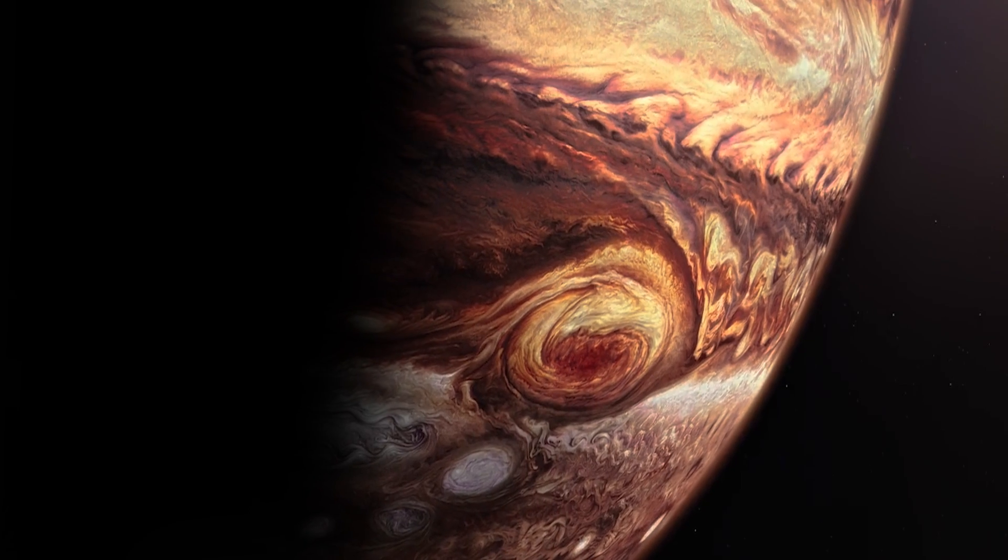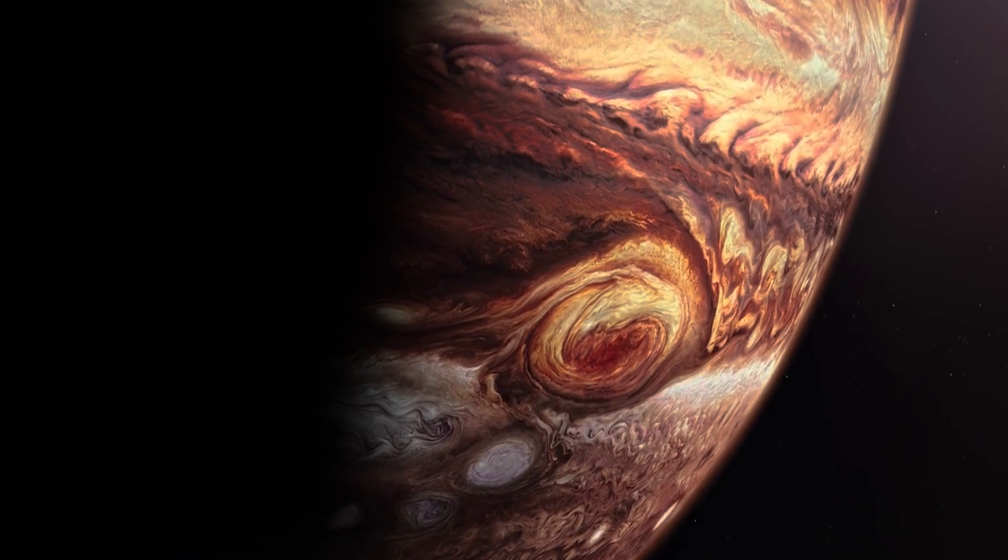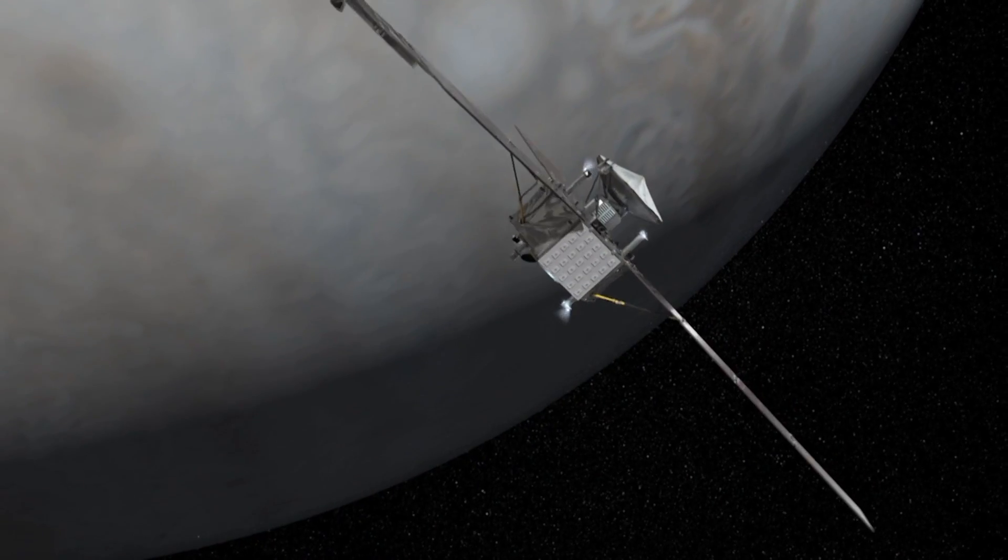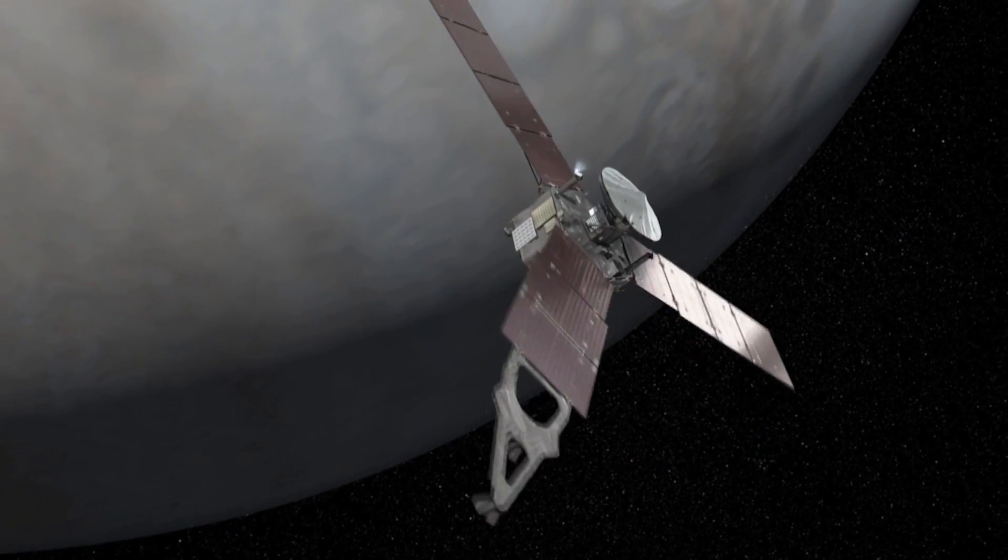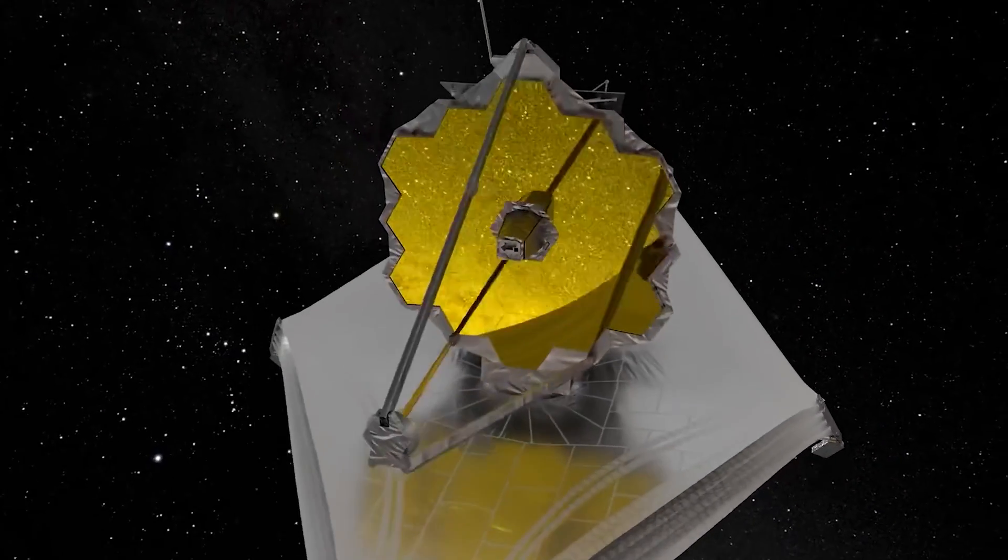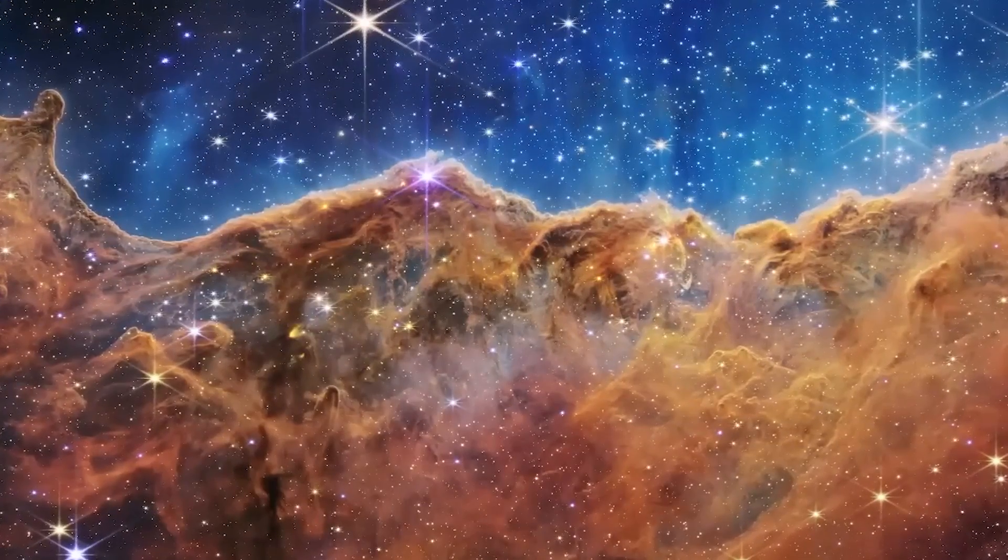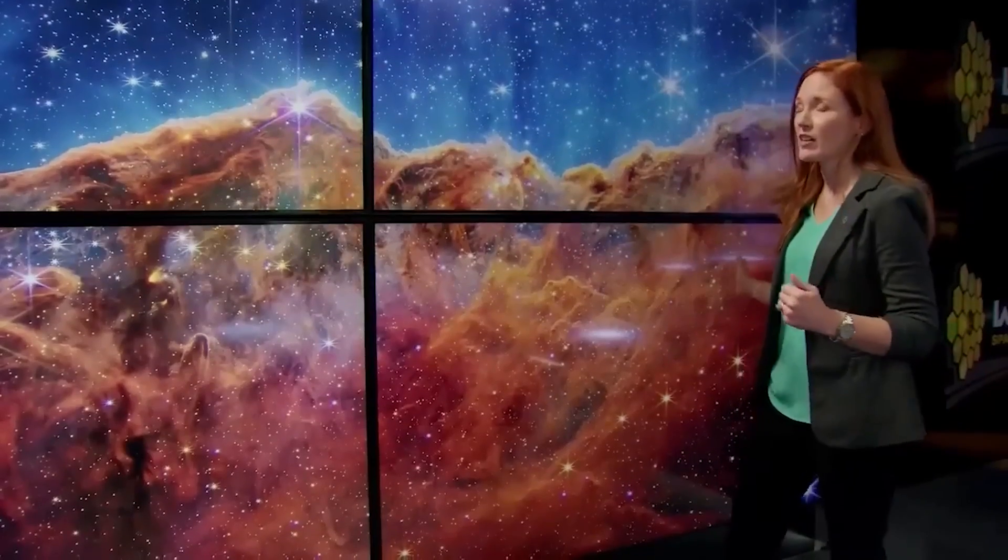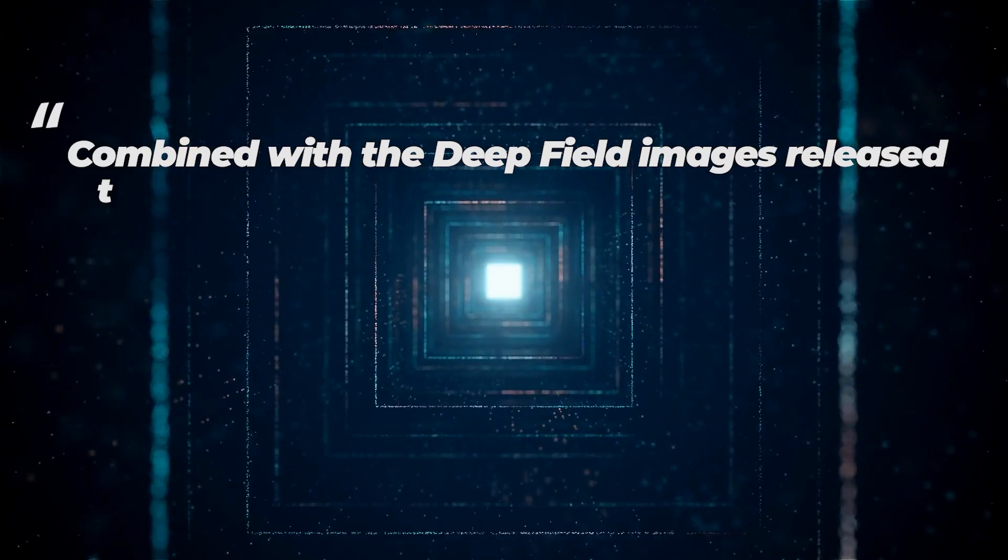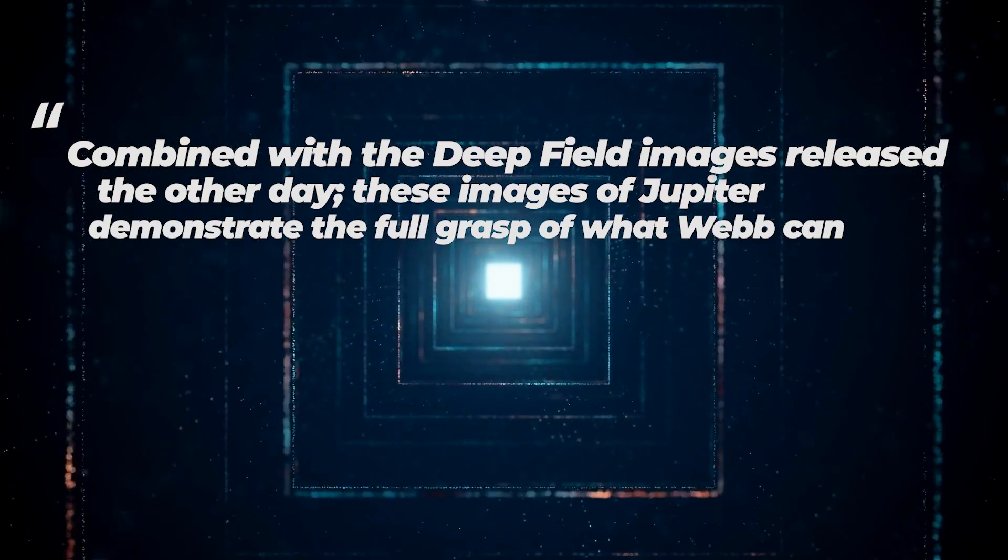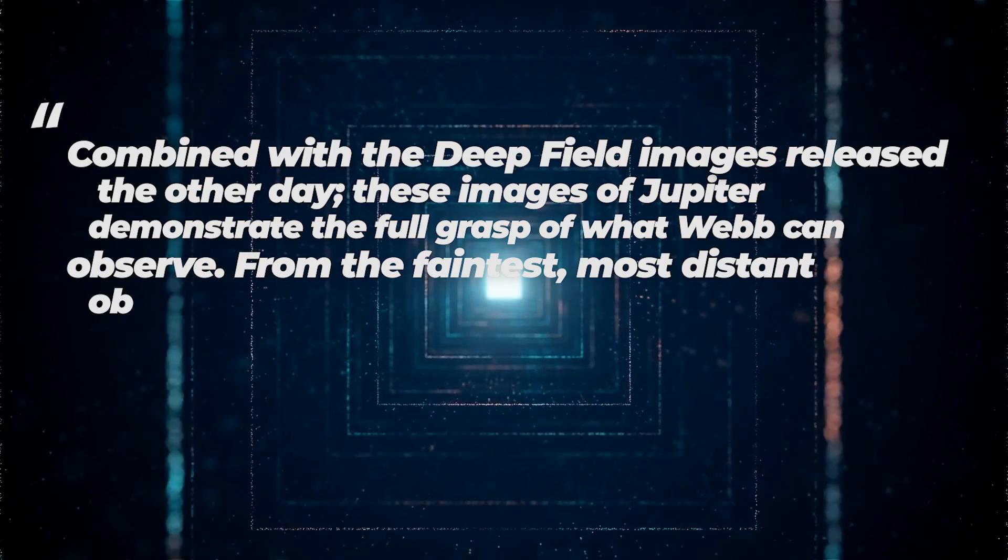It's possible to summarize the findings of a Jupiter system program which studies the dynamics and chemistry of Jupiter, its rings and its satellite system, in a single picture. Webb, however, doesn't only talk about Jupiter. The space telescope's infrared light sheds light on formerly unseen regions of the universe. Combined with the deep field images released the other day, these images of Jupiter demonstrate the full grasp of what Webb can observe.